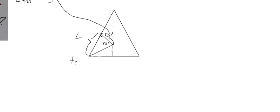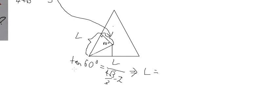Using tan(60°) with the known value, we calculate the side length. After computing, we get 4 minus 2 multiplied by the square root of 3 as the length of the side of the red triangle.